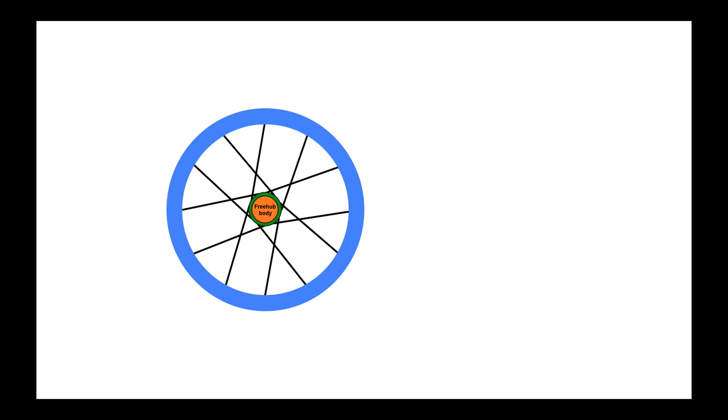Now, is there anything different if my drive side spokes are crossed as I see here? Now, in this wheel, which happens to be wheel seven,